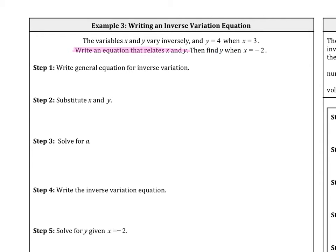The second step is we're going to find y when x equals negative 2. So we write the general equation for inverse variation, that is y equals a over x. Now we substitute for x and y so we can solve for a. So y equals 4, and then a over 3. Then to solve for a, multiply by 3 to both sides. So in this case, a equals 12.